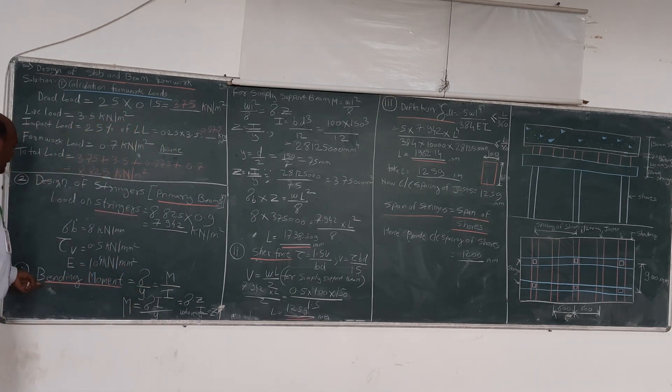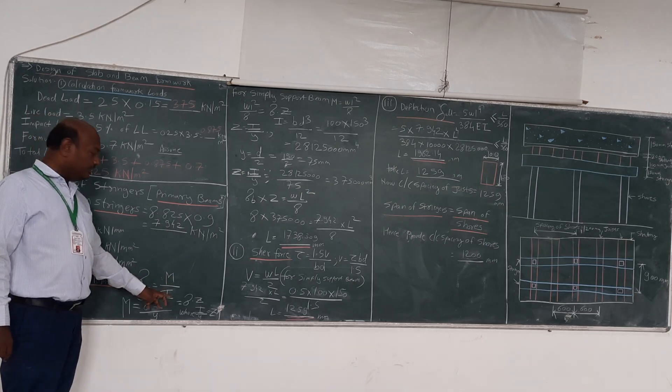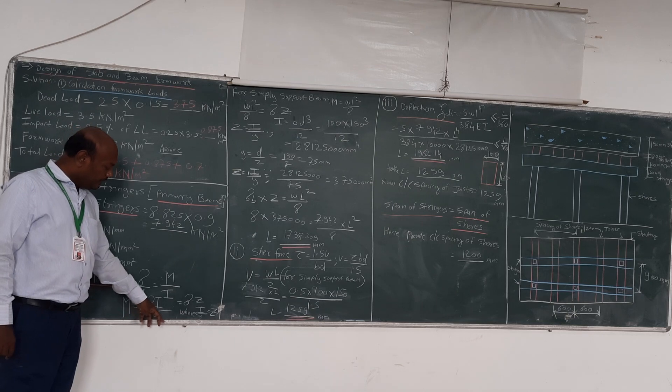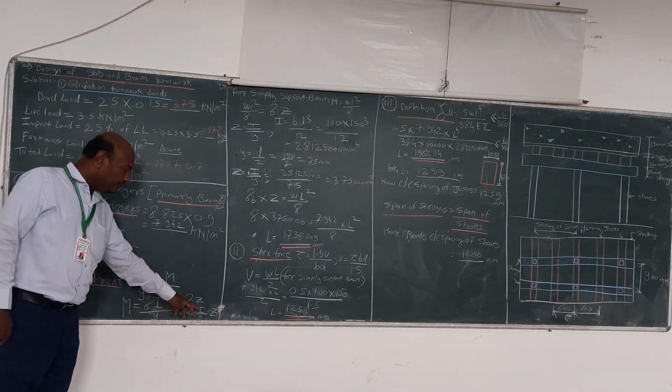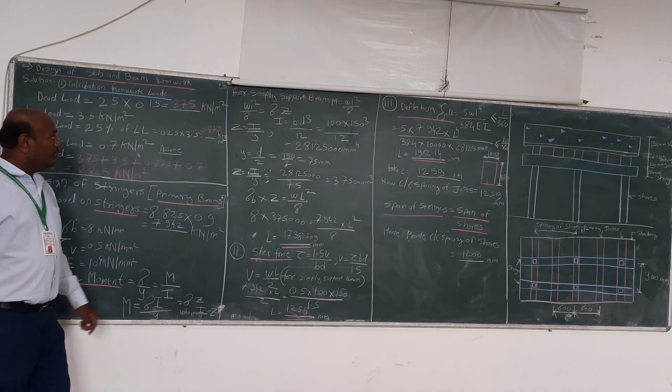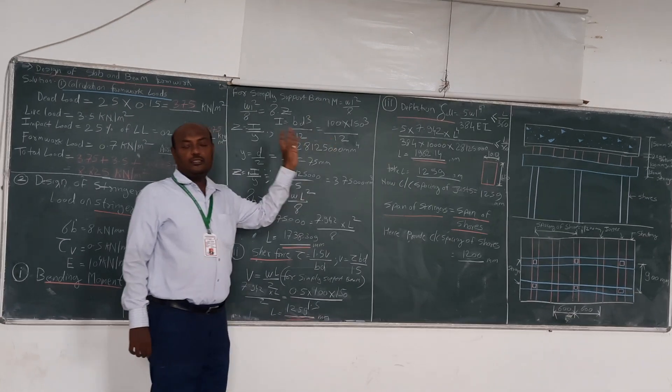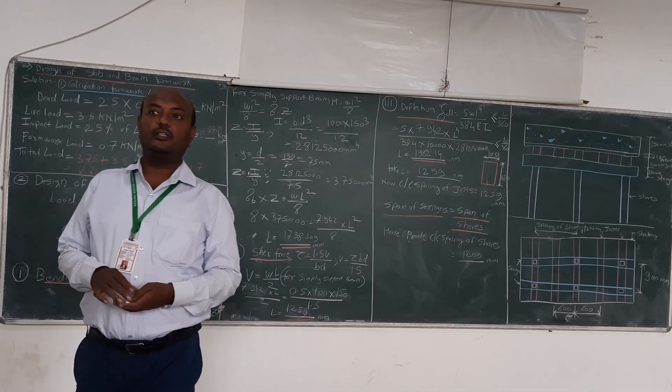Now we will start with the bending moment formula. The bending moment formula is sigma y equals M divided by Z, where M equals sigma Z, where Z is I divided by y. Now since this one is a simply supported beam, all the structures or all the beams which we are using or designing in this form of one slab are simply supported.